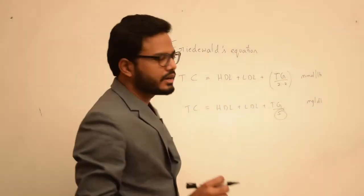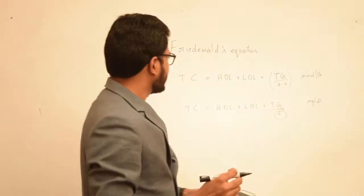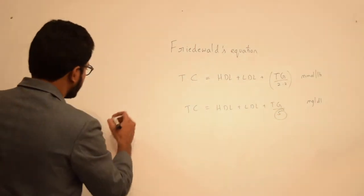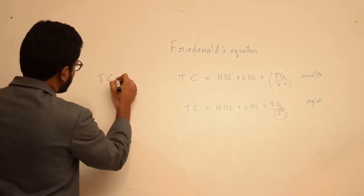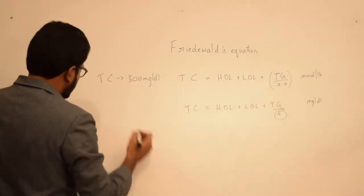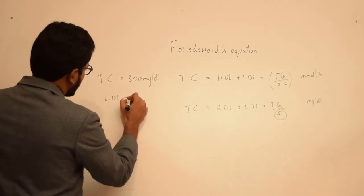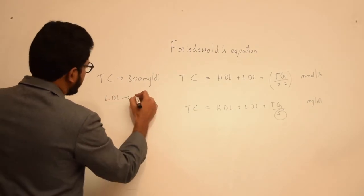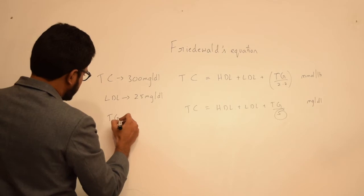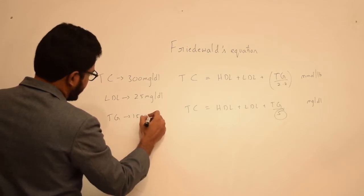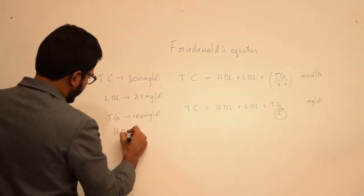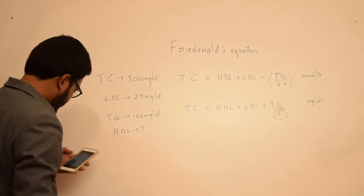So we have one question from this particular topic in AAPG 2015. The question is: total cholesterol is 300 milligrams per deciliter, LDL is 25 milligrams per deciliter, and triglycerides are 150 milligrams per deciliter. And what would be the value of HDL? So that's the question.